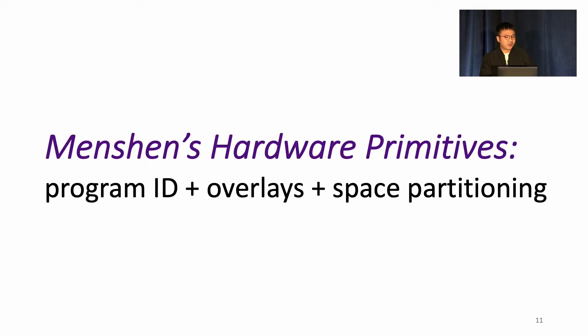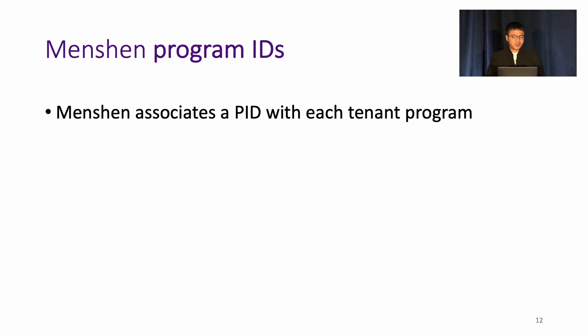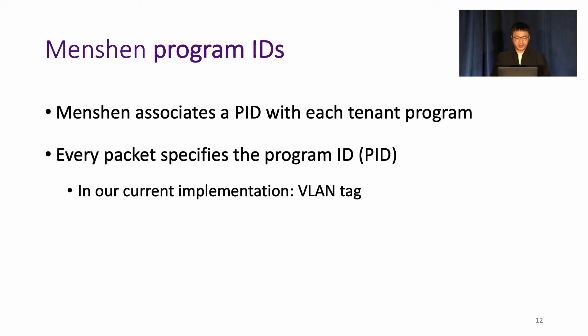Menshen's hardware primitives consist of embedding program ID and using the technique of overlays plus space partitioning. Basically, Menshen associates a program ID or PID with each tenant program. And every packet flowing through the network will carry this PID. In our current implementation, this is the VLAN tag.